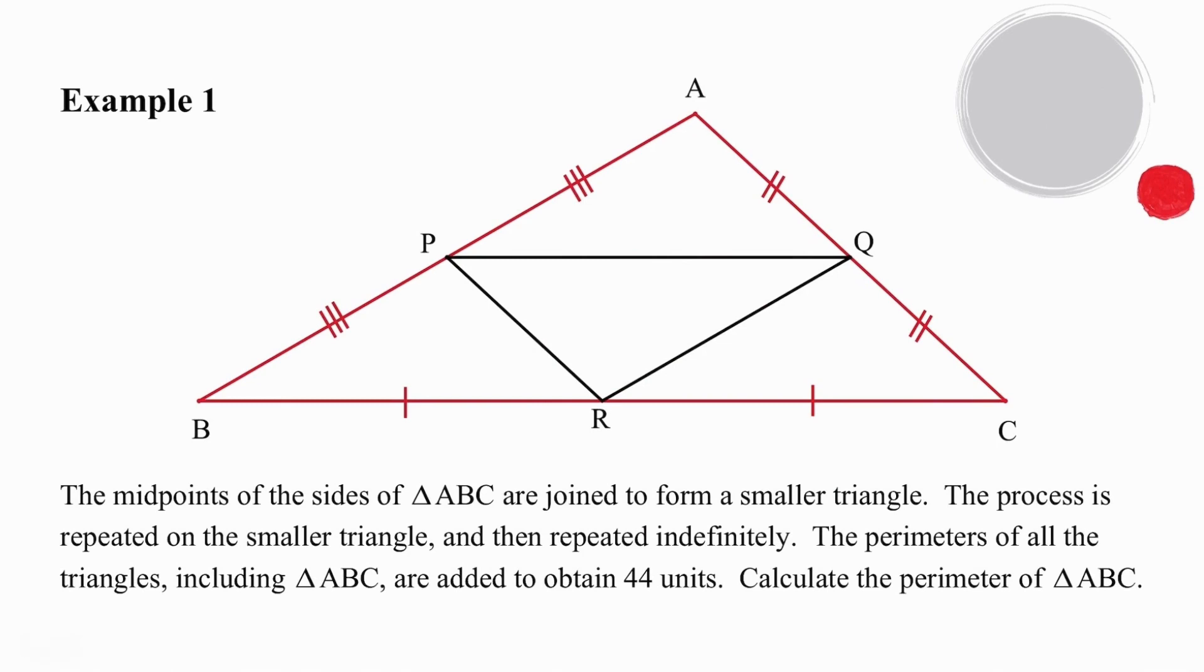In example 1, we are given midpoints P, Q and R on the sides of triangle ABC. We are told that those midpoints are joined to form a smaller triangle and that the process is repeated on the smaller triangle and then repeated indefinitely. The perimeters of all the triangles, including triangle ABC, are added to obtain 44 units. What we need to do is calculate the perimeter of triangle ABC.